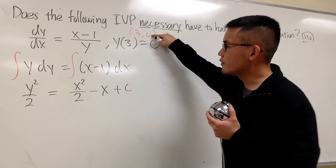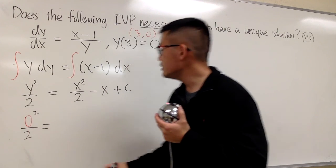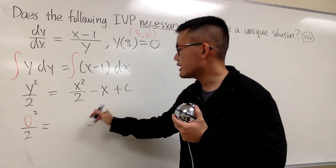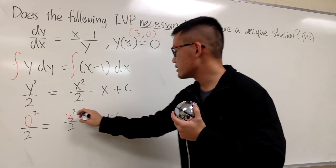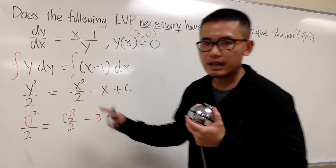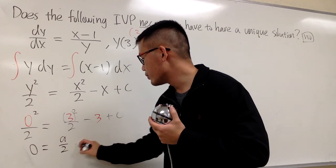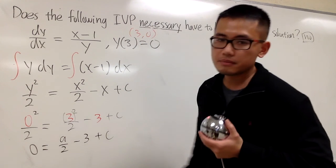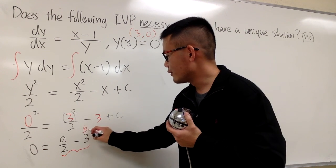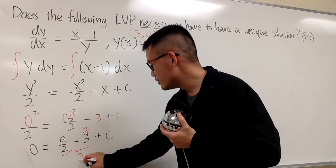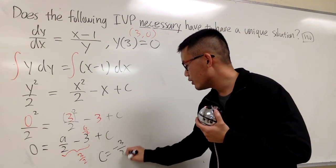Now plug in 0 for y and 3 for x. So 0 squared over 2 equals 3 squared over 2 minus 3 plus C. On the left-hand side this is just 0. On the right-hand side this is 9 over 2 minus 3 plus C, which is the same as 9 over 2 minus 6 over 2, giving positive 3 over 2. Bringing that to the other side, C equals negative 3 over 2.